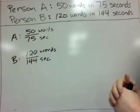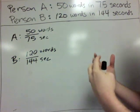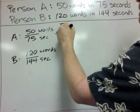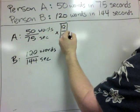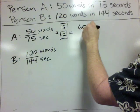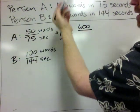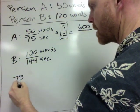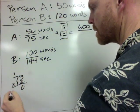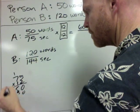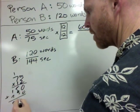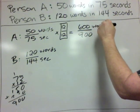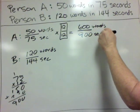Let's do the first one as getting a common numerator. So we are going to multiply this ratio by 12, and that gives us a numerator of 600. 50 times 12 is 600. 75 times 12, I'm not sure what it is. I add these together, I get 900. Alright, so this is 600 words in 900 seconds.